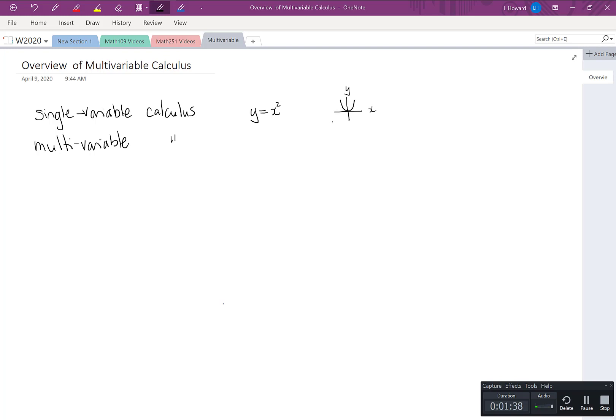That's the sort of function we're used to in single variable calculus. Whereas in multivariable calculus, our function, which we'll often call z, depends on two or more variables, often just two variables. For example, z equals x squared plus y squared. To graph that function, we need three axes: x, y, and z. Here are the x, y, and z axes. x comes straight out of the page, y goes to the right, and z goes up. We'll talk more about graphing surfaces throughout this series.